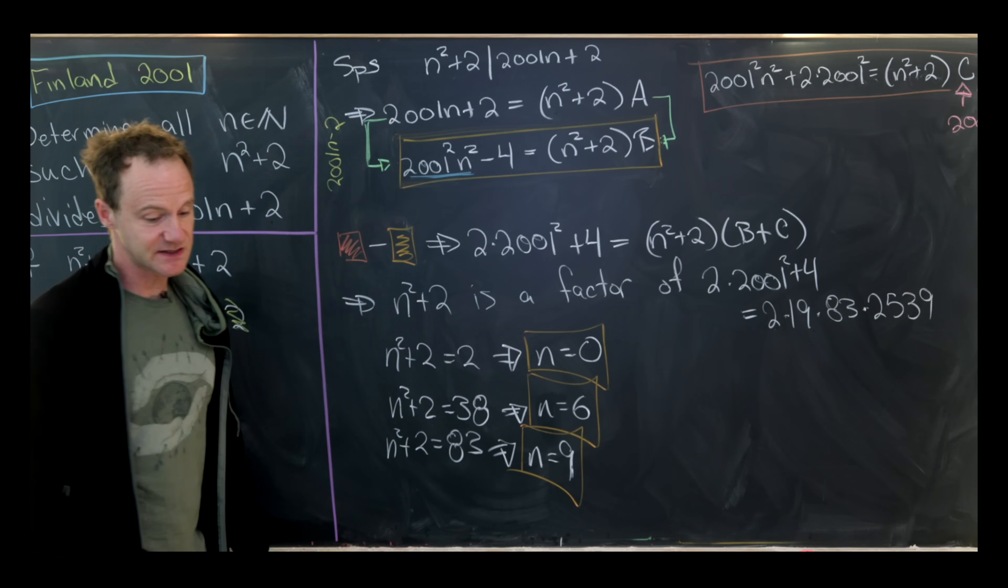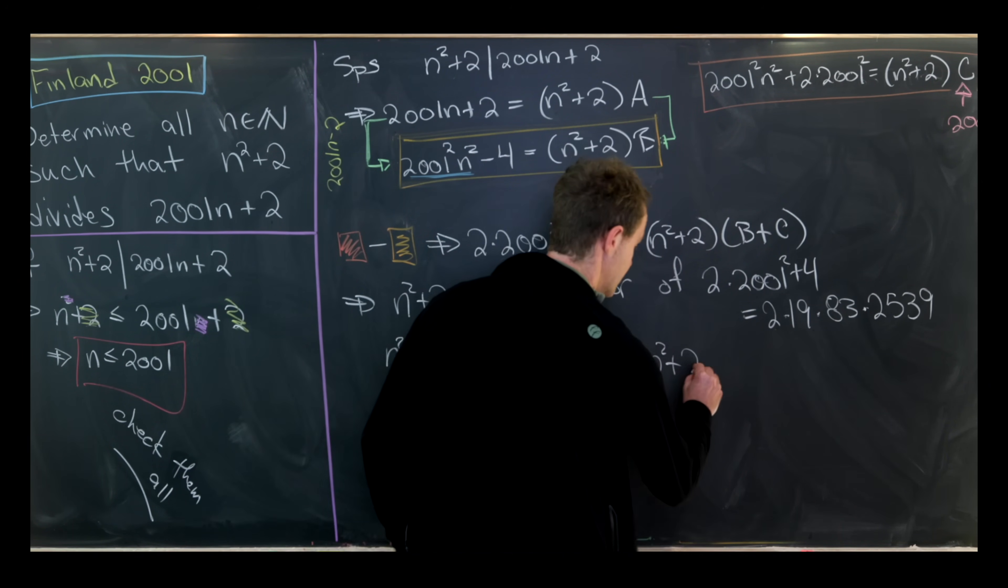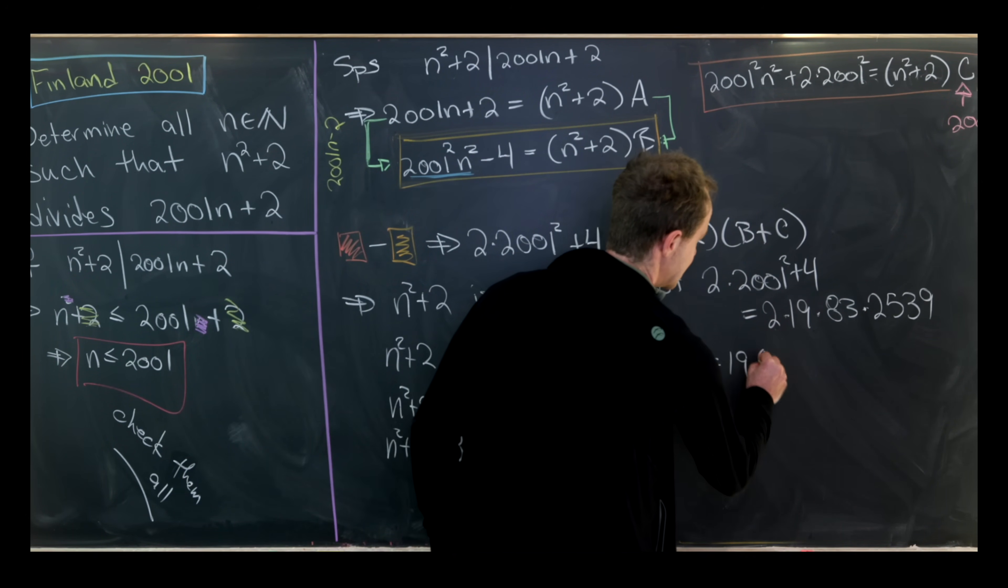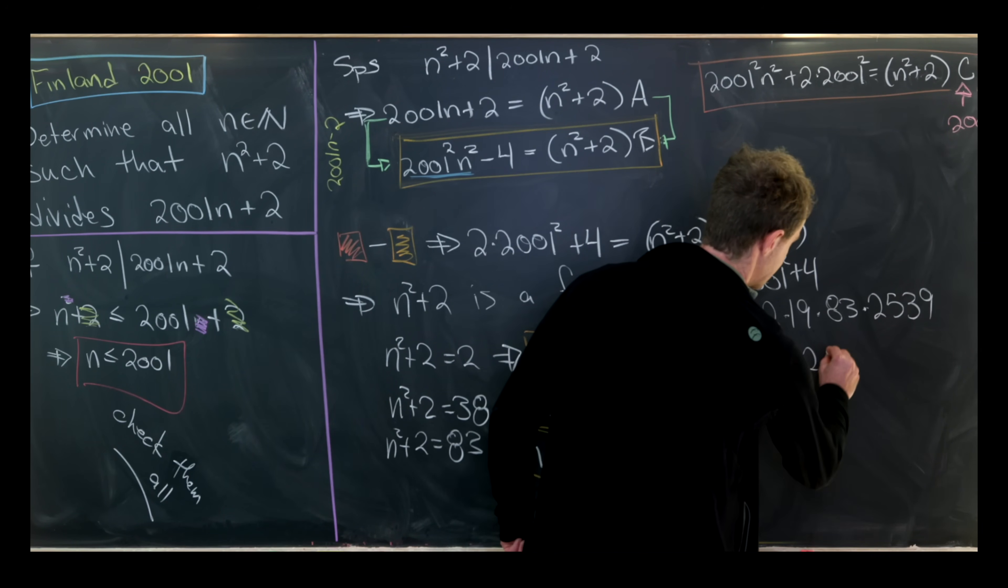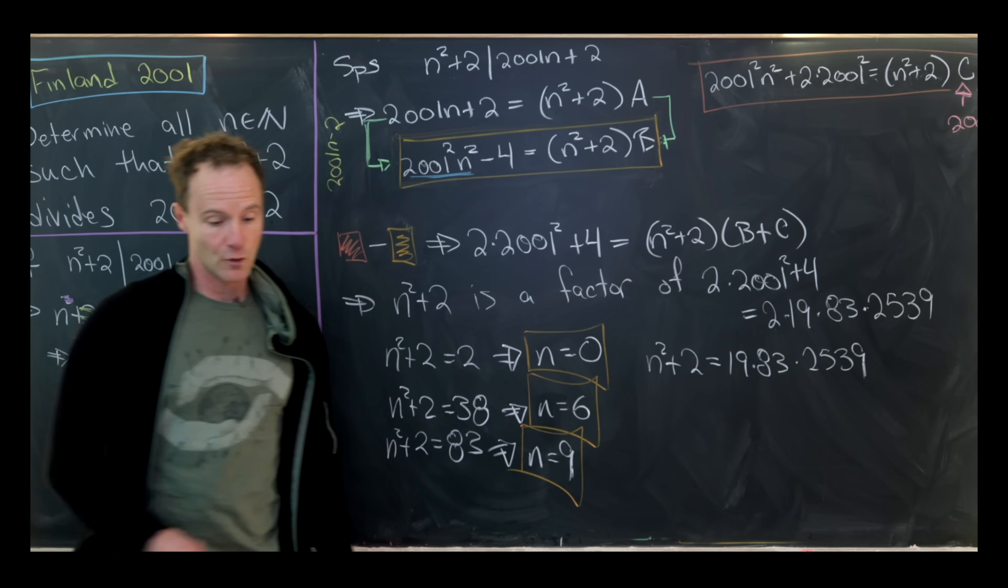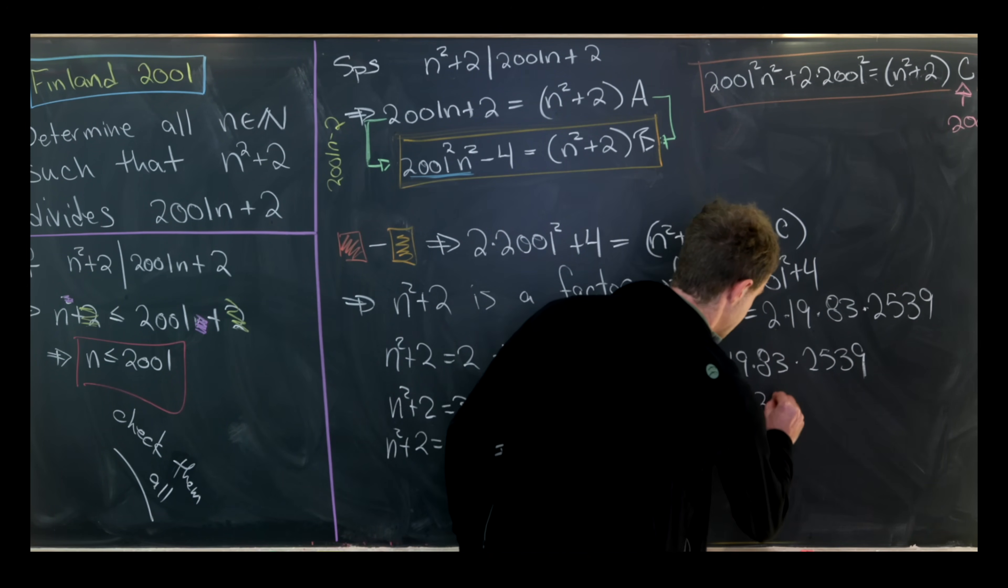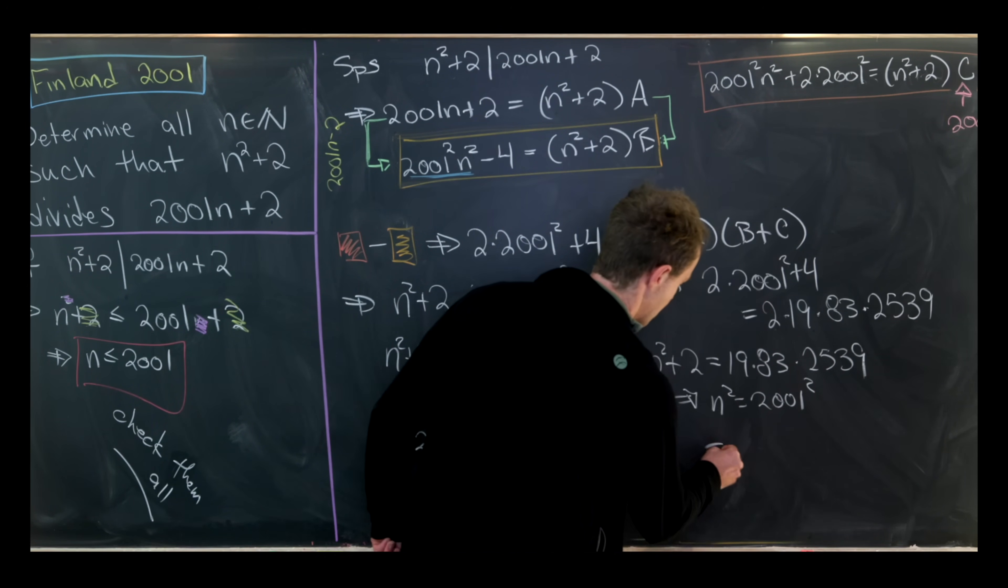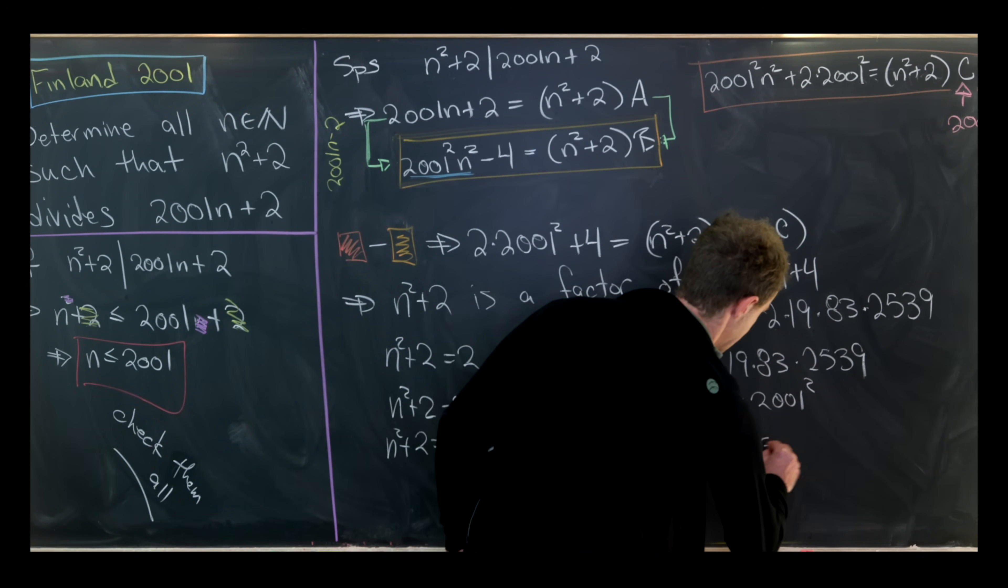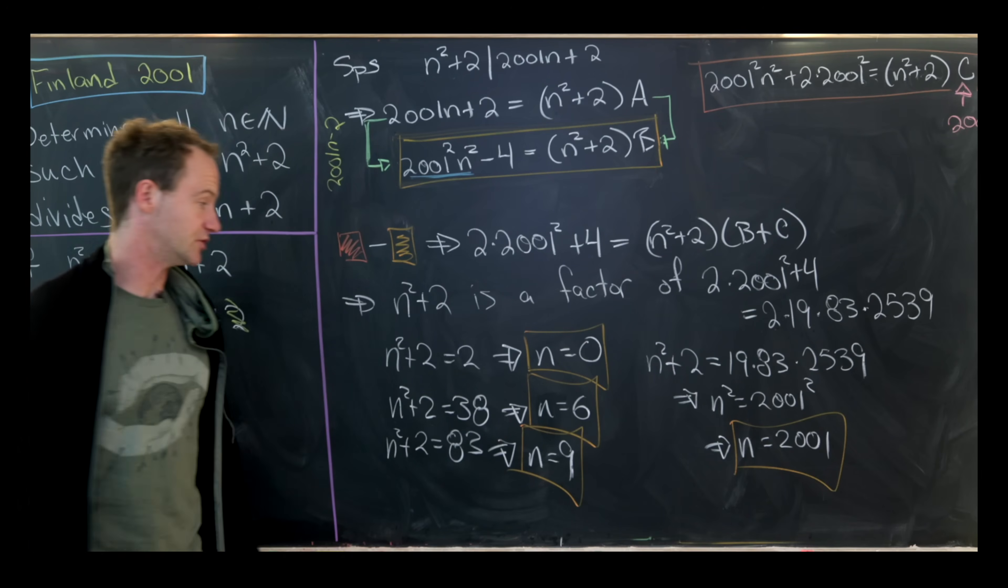And we get one more solution. That's the solution that we get if we take n² + 2 to be equal to 19 times 83 times 2539, which ends up telling us that n² is equal to 2001², or in other words, n equals 2001. And that would be our final solution.